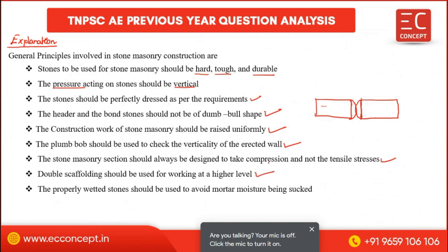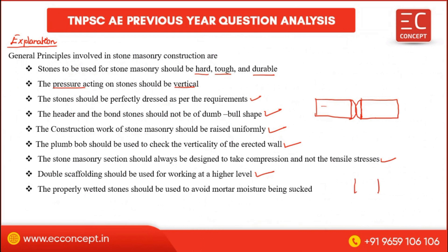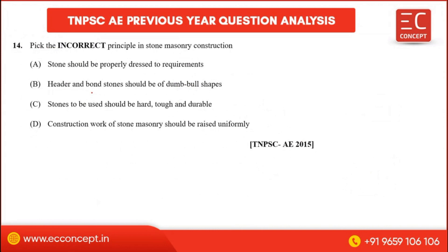Double scaffolding should be used for working at a higher level. Properly wetted stones should be used to avoid mortar moisture being absorbed. Regarding the incorrect principle: header and bond stones should be of dumbbell shape — this statement is incorrect. The correct statement is that they should NOT be of dumbbell shape.